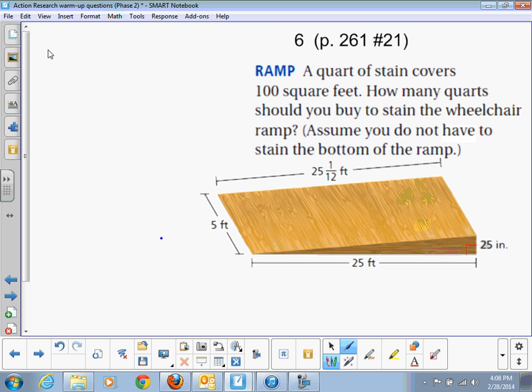So I'm just going to start off finding the area of the top. Now I see this mixed number and rather than deal with that, we can just change 25 and 1/12 to be approximately 25.08 feet because 1 divided by 12 is 0.08 repeating. So we'll just say 25.08.